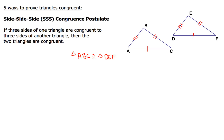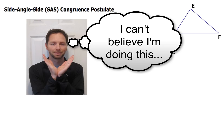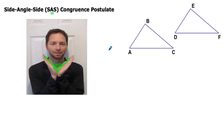Our next way to prove two triangles are congruent is going to be the side-angle-side congruence postulate. Before we do this, I want you to go ahead and put your hands together just like mine are in this picture — put your hands together so that down here your wrists, when they come together, make a V. What's really important about this congruence postulate is that when you put your wrists together like that, there's an angle formed — and that angle is the angle that's included between my two hands. That included angle between the two sides is a very important piece of it.